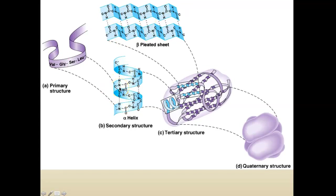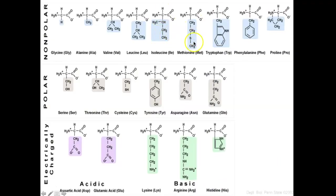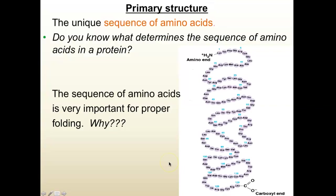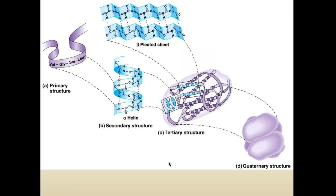After your alpha helices and beta-pleated sheets are formed, all the other R groups are going to interact. All the other parts of that amino acid start to interact — they might form bonds, fold in or out depending on the nature of the amino acid. So you get a finished three-dimensional tertiary structure. This is like your sweater: the yarn started folding up into an alpha helix or beta-pleated sheet, and now we have the finished product. This tertiary structure is the completed form.